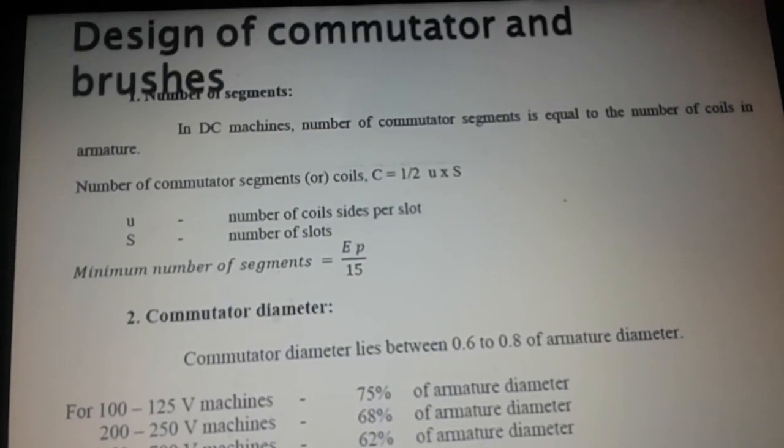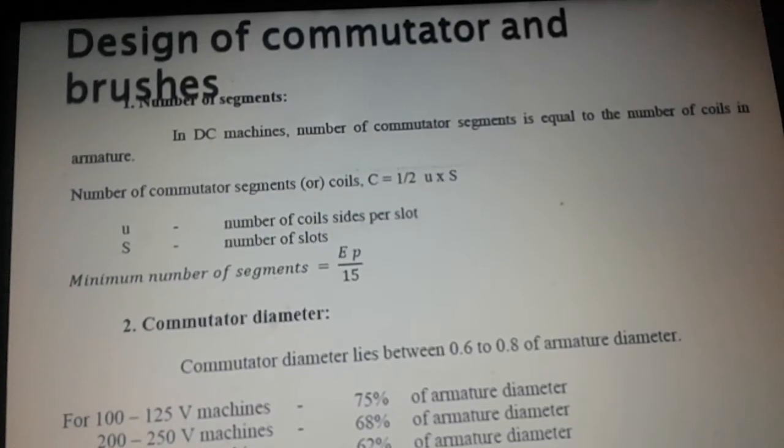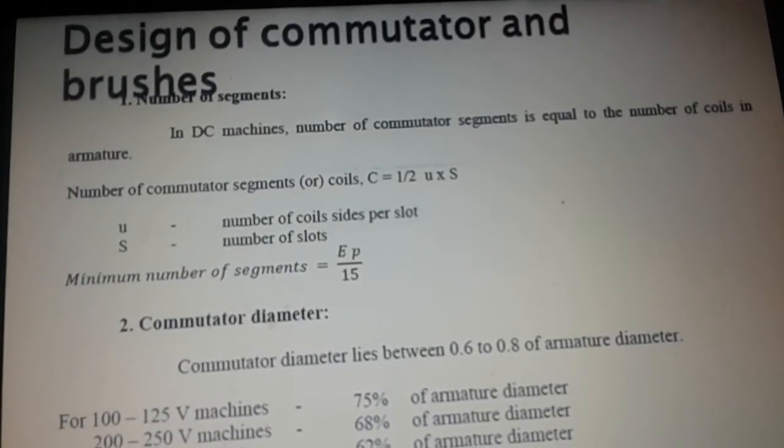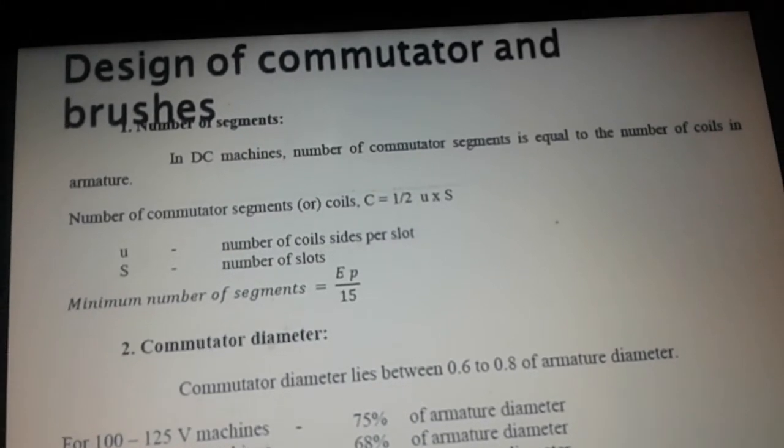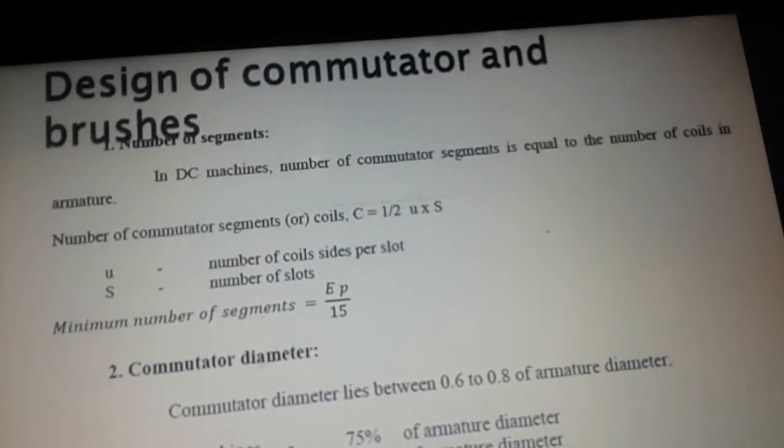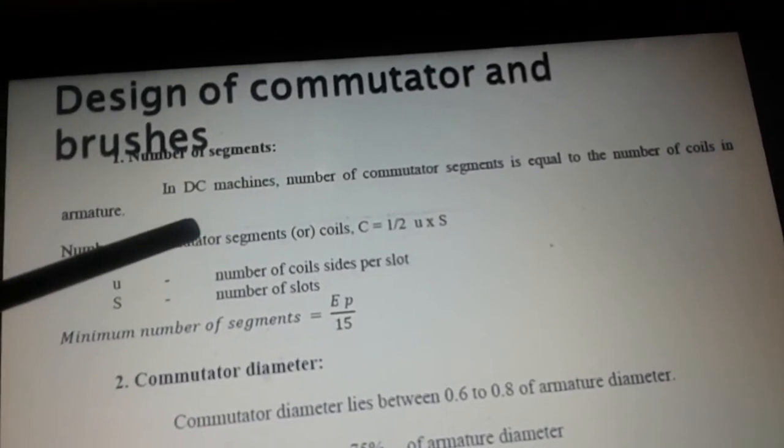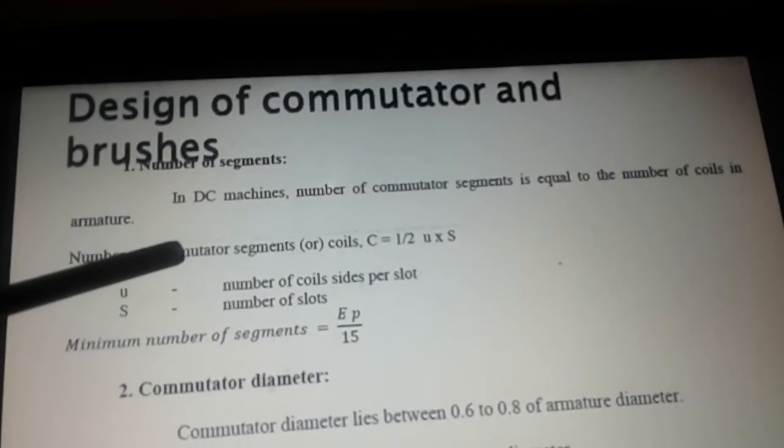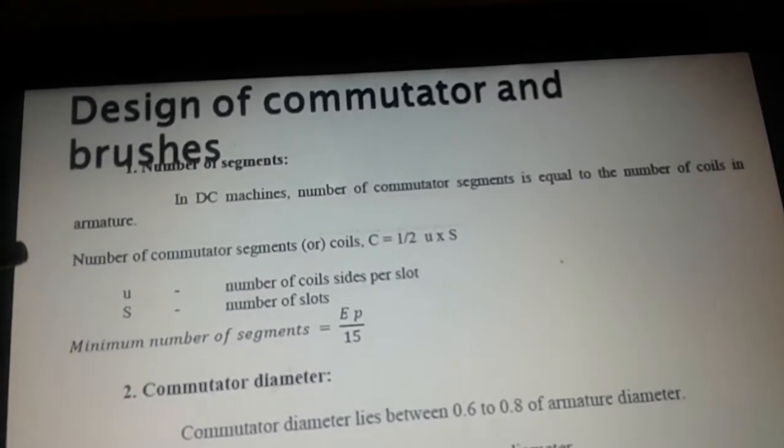Now we are going to see about the design of commutator and brushes in DC machines. First one is number of commutator segments. The number of commutator segments in a machine is equal to the number of coils in the armature.